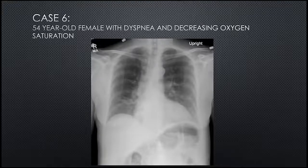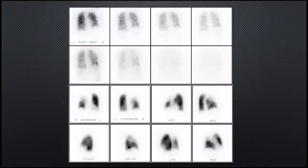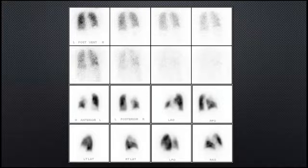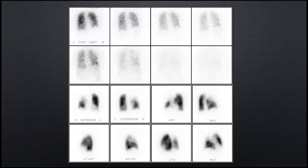Case 6: a 54-year-old female with dyspnea and decreasing oxygen saturation. Ventilation looks fairly normal with no significant air trapping on single breath, equilibrium, or washout. On perfusion images, a large area is missing in the right upper lung field corresponding to the right upper lobe — a lobar mismatch. This meets criteria for intermediate probability of PE, meaning another study is needed. When perfusion is missing to a single lung or lobe, various causes beyond PE exist, such as a mass compressing a vessel, which is why this is intermediate and not high.